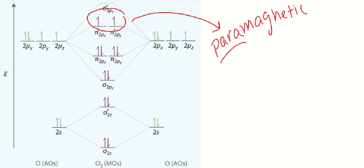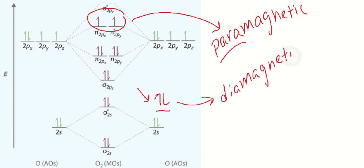It also predicts that O2 is paramagnetic, which means there are unpaired electrons. When you have unpaired electrons and you put the substance into an inducing magnetic field, it will be attracted to that field. Whereas if all electrons are paired, we call that diamagnetic — and in diamagnetism, the substance will actually slightly repel the magnetic field, though the magnetic properties are much less observable.